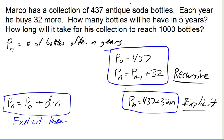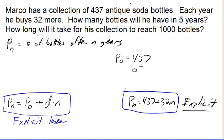If we need to decide what type of equation to use, in this case, the explicit equation is going to be a lot easier to work with. The recursive equation has the advantage that it's very easy to think about—it makes a lot of sense. I start with 437, each year I add 32 to the previous amount. But the explicit is much easier to calculate with.